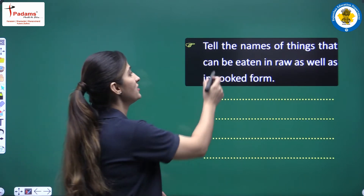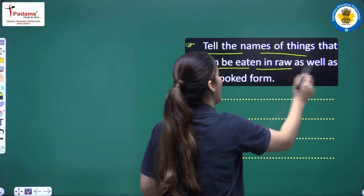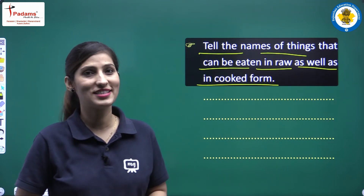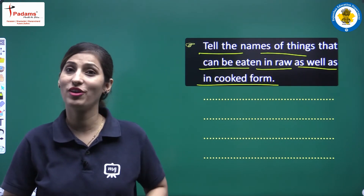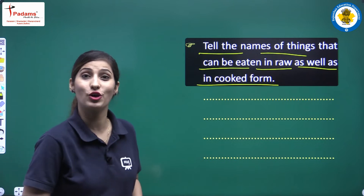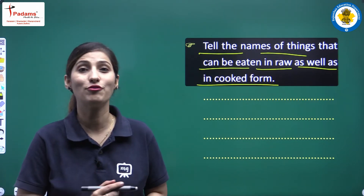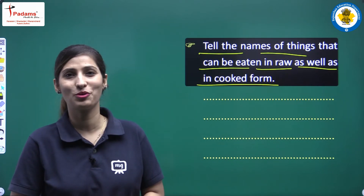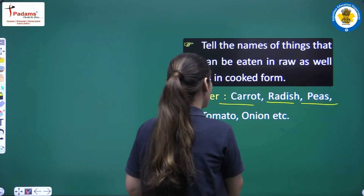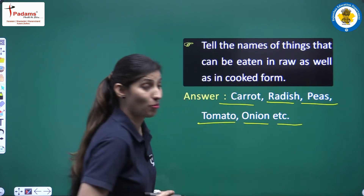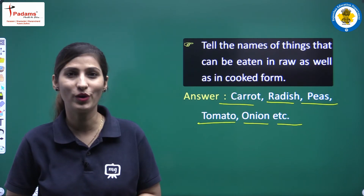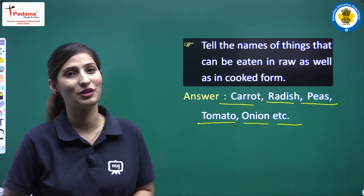Our next question is: tell the names of things that can be eaten in raw as well as in cooked form. Here we are talking about foodstuffs that can be eaten raw and also after cooking — you can use them either way. The examples are carrot, radish, peas, tomato, onion, etc. There are many such things. You can add some more names in your answer.